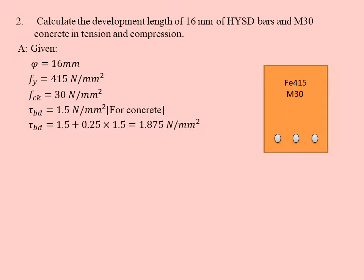τbd value: 1.5 + 0.25 × 1.5 = 1.875. This τbd value 1.875 is used in compression. In compression development length, we substitute τbd as 1.875 and get 962.8 mm.